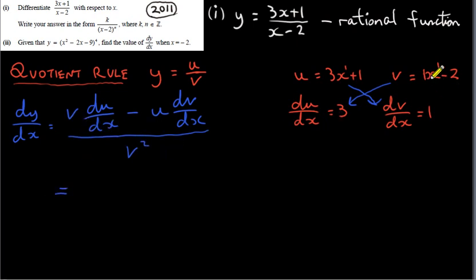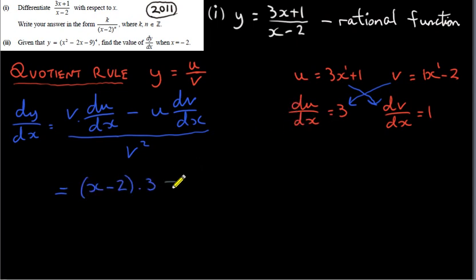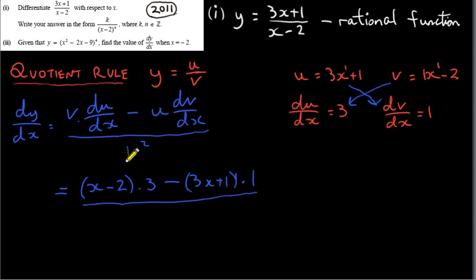v in our example is x minus 2, and since it has two terms we put it in brackets. du/dx is just 3. Then we subtract u, which is 3x plus 1 — again in brackets since it has two terms — multiplied by dv/dx, which is 1. All of this is divided by v squared, so we take x minus 2 and square it.